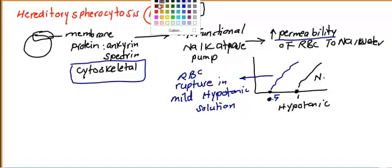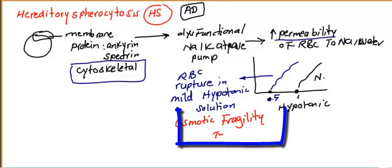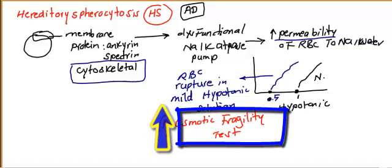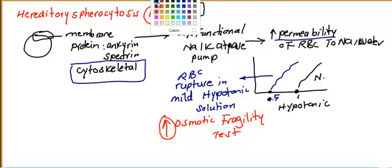This test is called the osmotic fragility test. In case of hereditary spherocytosis, osmotic fragility is increased, because red blood cells rupture in a mild hypotonic solution. In normal patients, red blood cells do not rupture at mild concentrations. This is due to the NaK ATPase pump problem causing increased permeability to water and sodium.